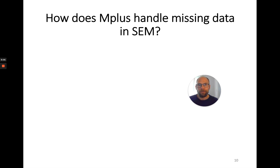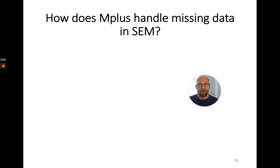Hello everyone. In this video, I want to give you an overview of how Mplus handles missing data when you run structural equation models, confirmatory factor analysis, path analysis, or some other kinds of analysis. What kinds of options do you have in Mplus to address missing data, and how does Mplus do this by default?